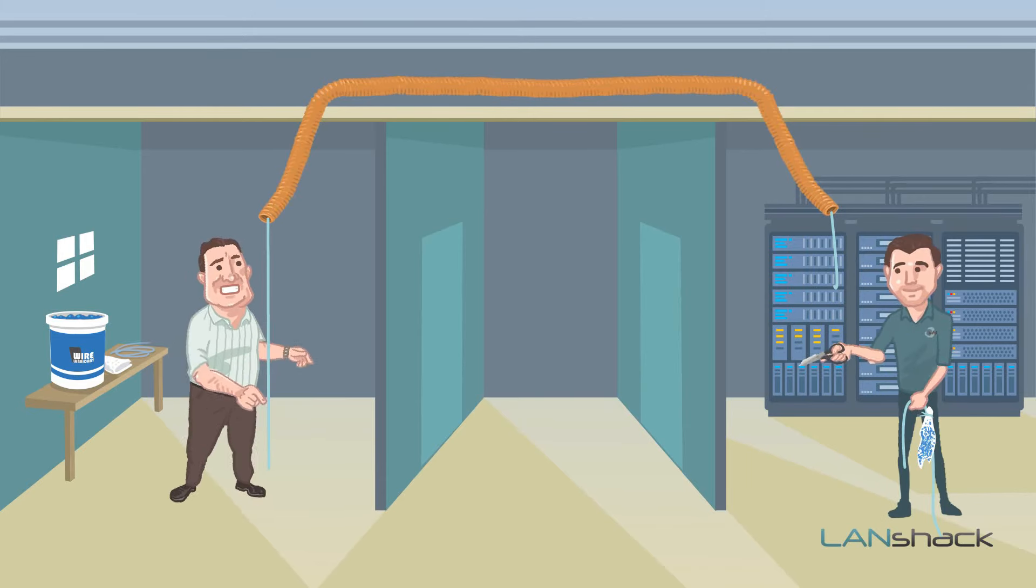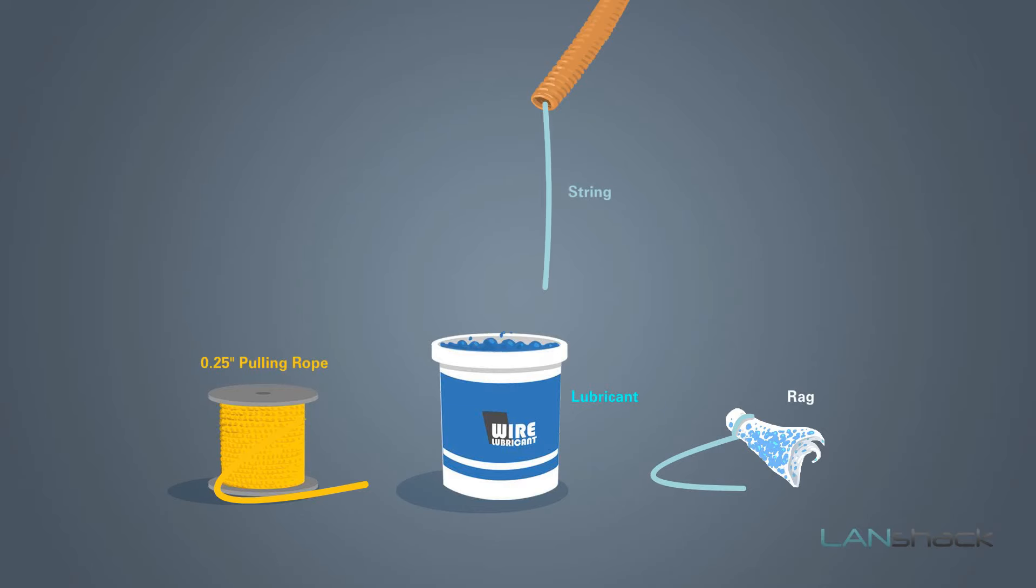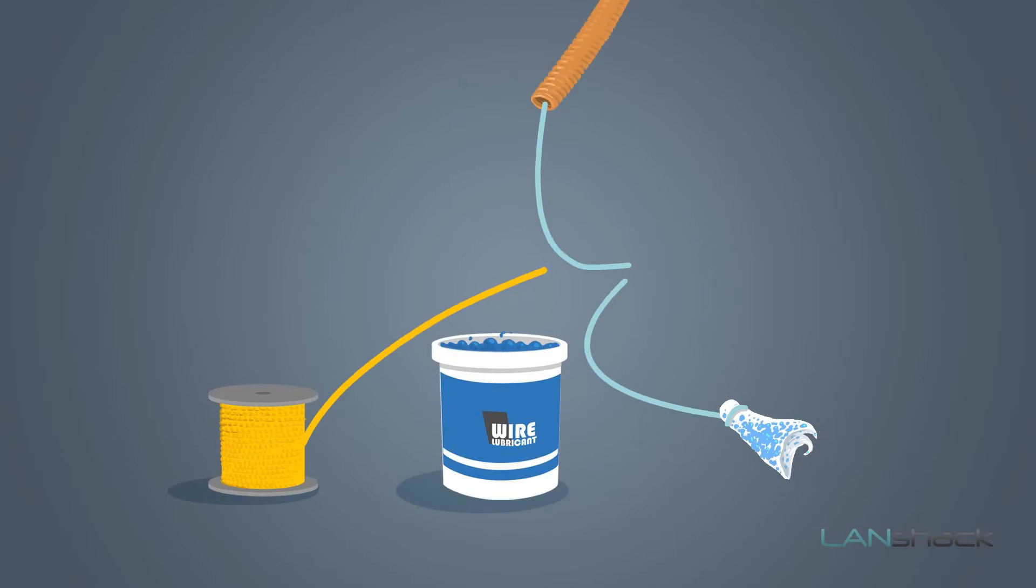Now we're going to lubricate in the opposite direction. To do this, grab the string that came from the other direction and attach the rag along with quarter-inch pulling rope by making one strong knot.